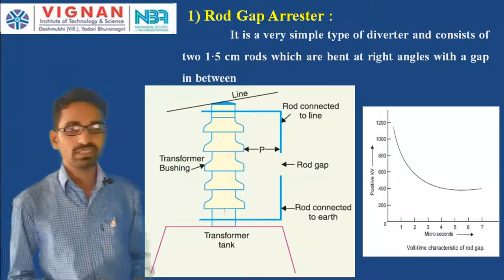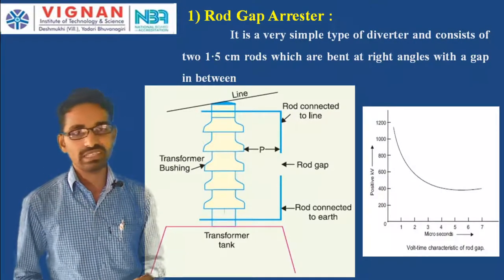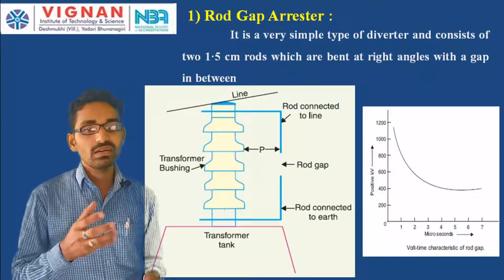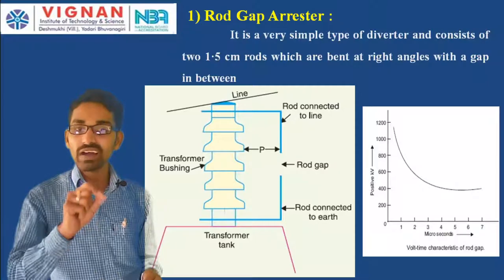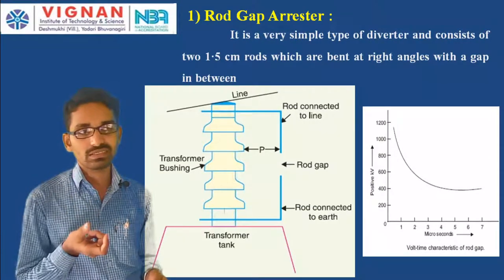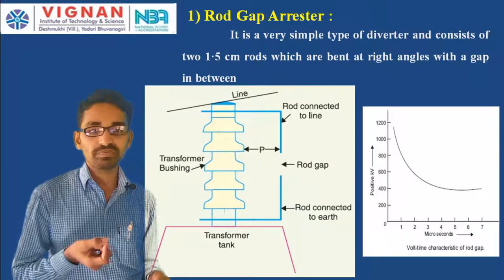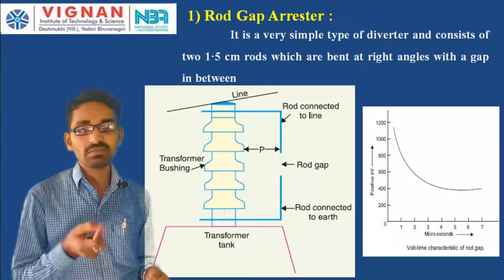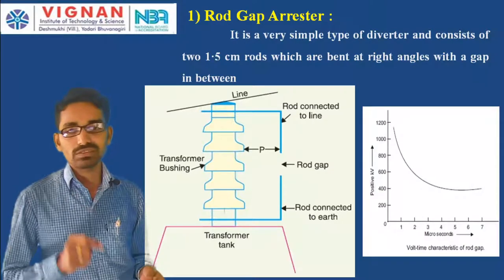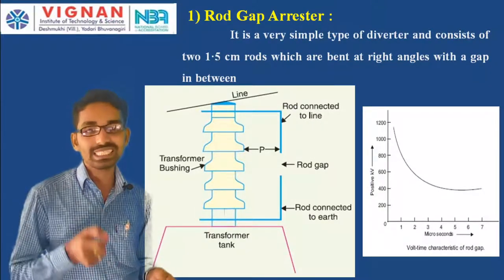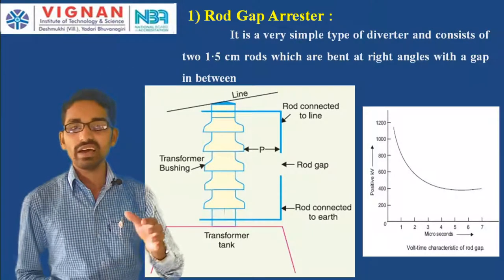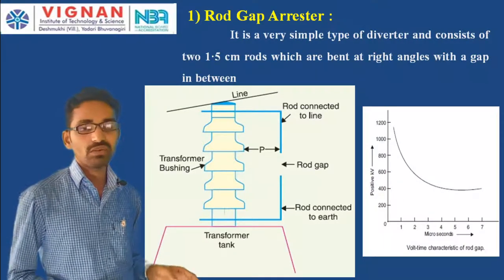Whenever there is a surge — that is, whenever lightning occurs — there is a large amount of current. That large current flows through the rod gap by creating a spark between the rods. The large current destroys the dielectric medium between the rods and a spark forms across the rod gap. That spark continuously allows the flow of lightning currents through the gap and to earth until the lightning currents are sent to the ground.